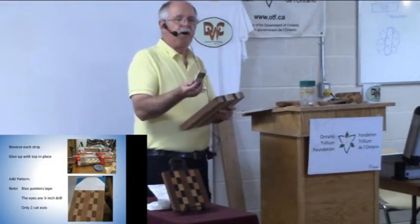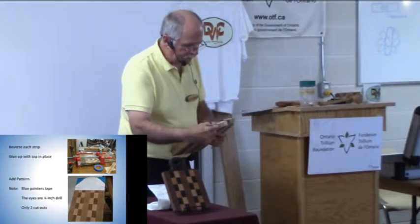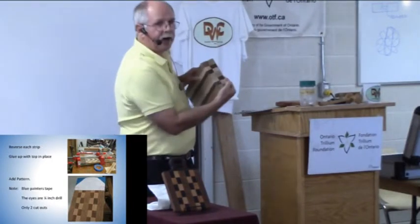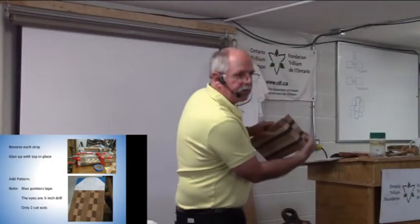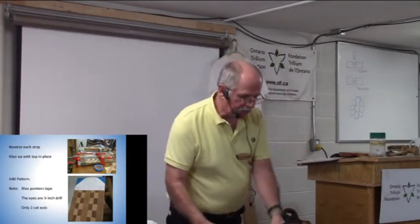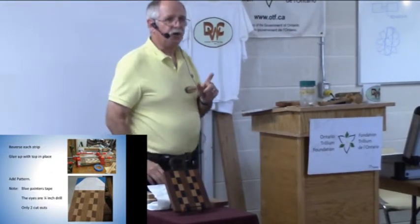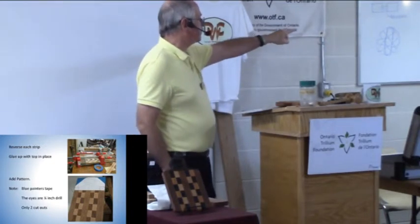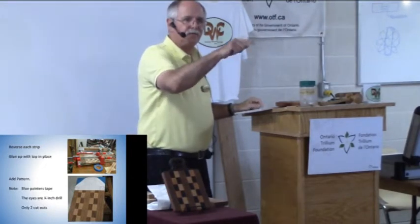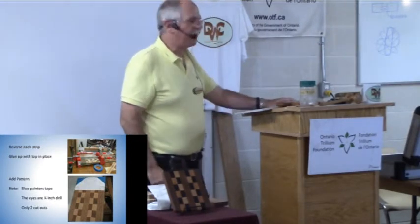So after you cut all your strips, which you have lots of, you now start to glue them together. Reverse every one so you get your pattern happening. You glue your pattern to the top so that it's on here. And then this is not the hardest scroll saw job in the world. The two eyes are quarter inch drills. There's only two cutouts in there. You can put big starter holes, cut around with a scroll saw, cut the top part with a scroll saw, and away you go.